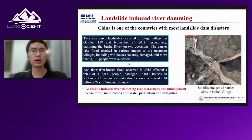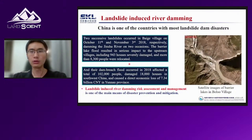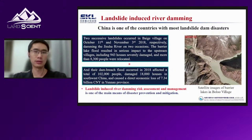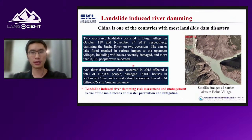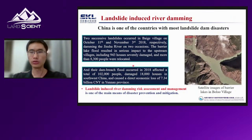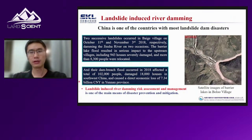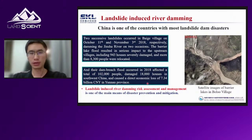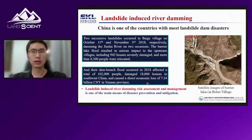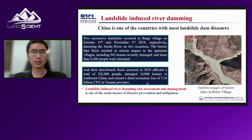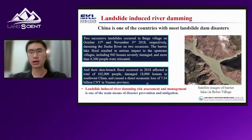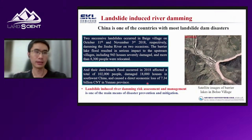China is one of the countries with the most landslide dam disasters. Two successive landslides occurred in Baigou village in 2018, damming the Jinsha River on two occasions. This affected a large number of people and caused huge property loss. Landslide-induced river damming risk assessment and management is one of the main means of disaster prevention and mitigation.